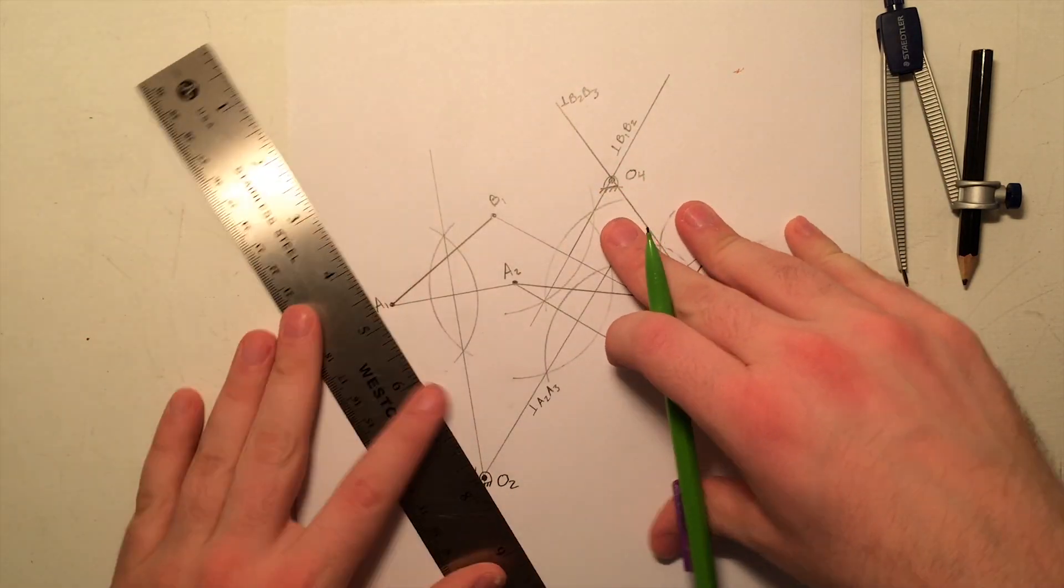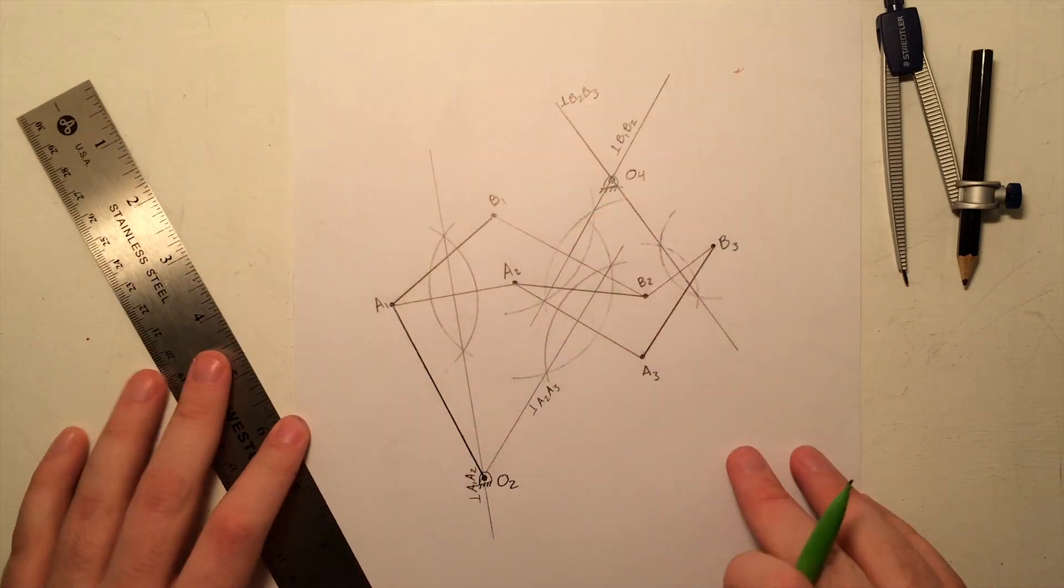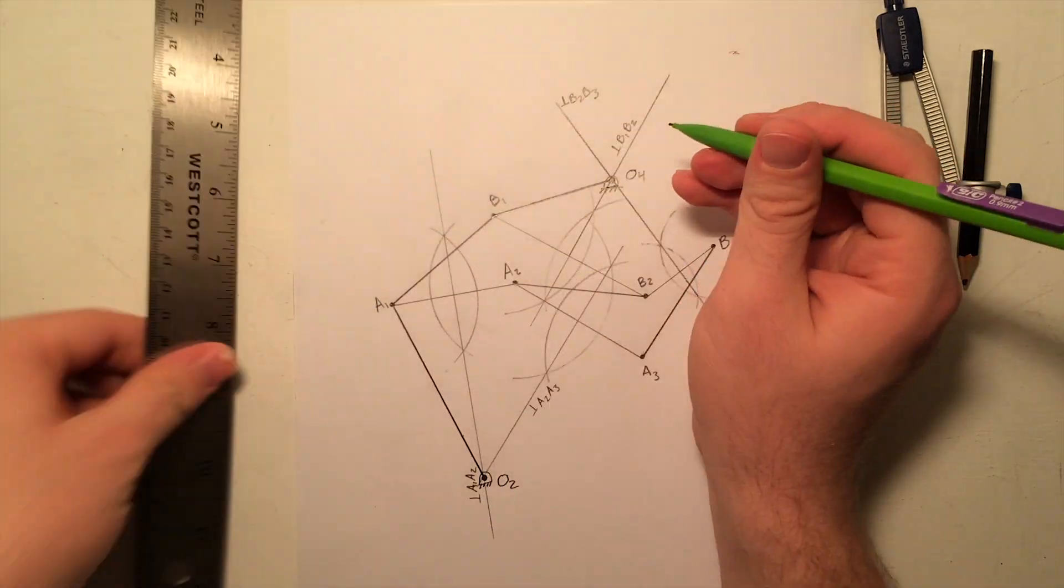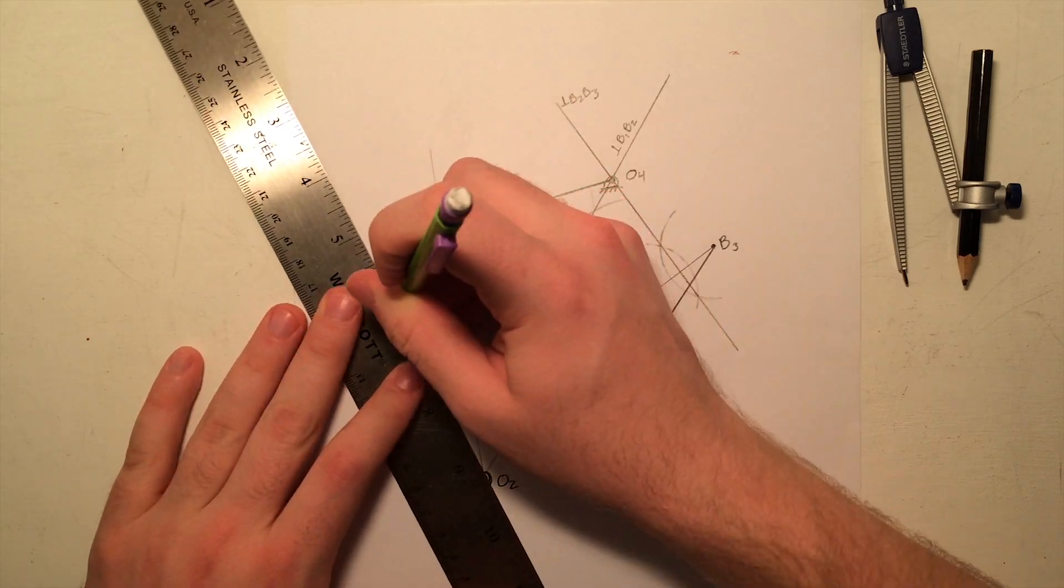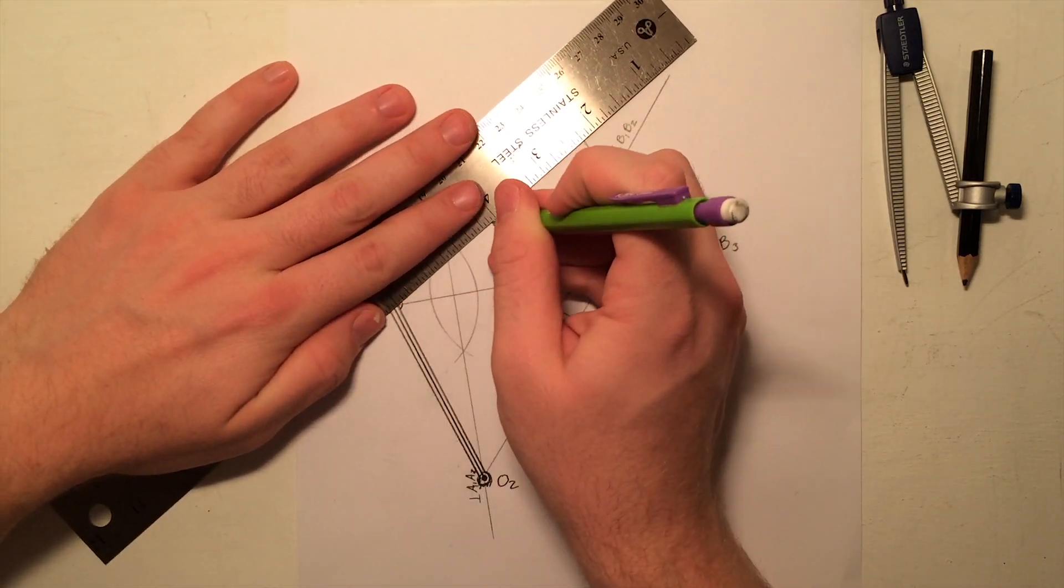Now that all the joints are located, draw a link connecting O2 to A1 and a link connecting O4 to B1. Once all the links are drawn, you have completed the synthesis of the four bar mechanism.